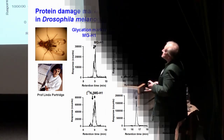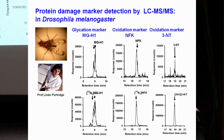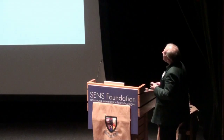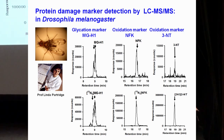We did some work in collaboration with Linda Partridge, probably the leading expert on Drosophila studies in aging. These are the responses we get from proteolytic digest — this is our MGH1. MGH1 is a mixture of two epimers that we can partly resolve, so we expect to see two peaks, and we do. The bottom trace is our stable isotopic standard, which ionizes with the same efficiency in the mass spectrometry source and acts as the perfect internal standard.